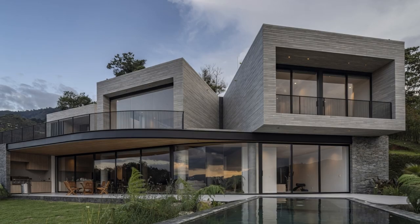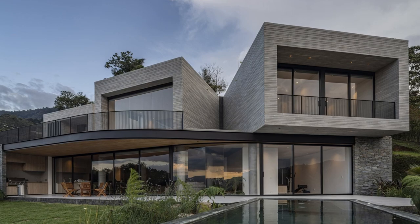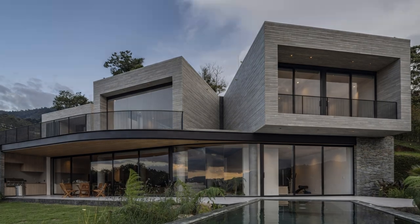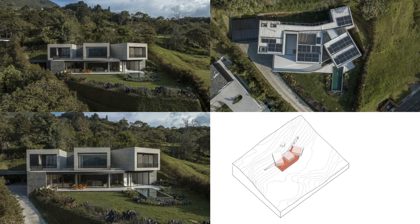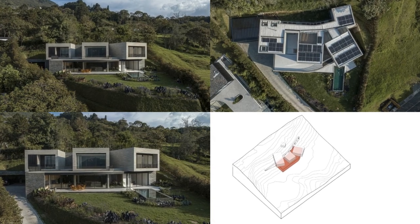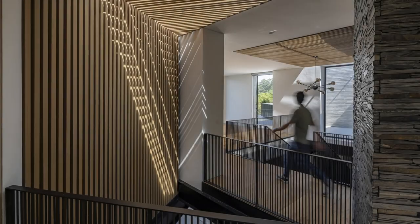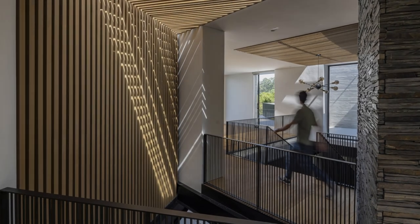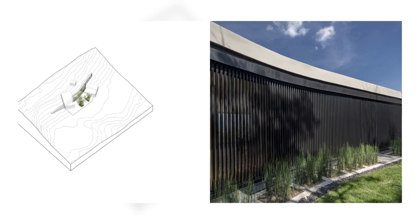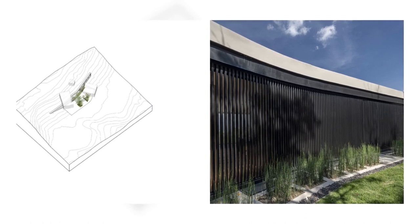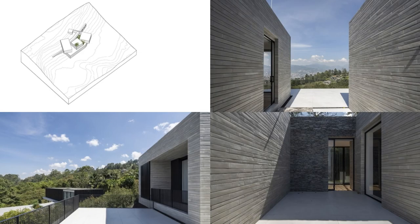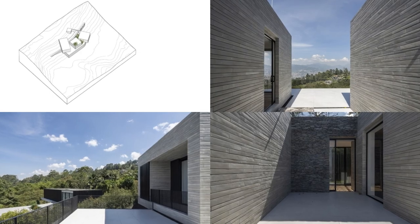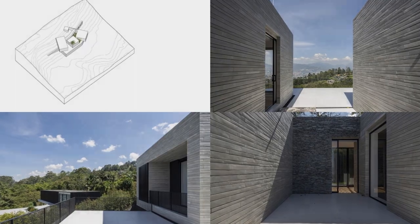This terrace extends to a natural platform formed with the intervention of the original topography. This volume supports the higher volumes that contain the private zones. A folded staircase next to the main access wall leads to the second level, made up of three volumes that contain the children's and parents' bedrooms, and a study in the middle of them.